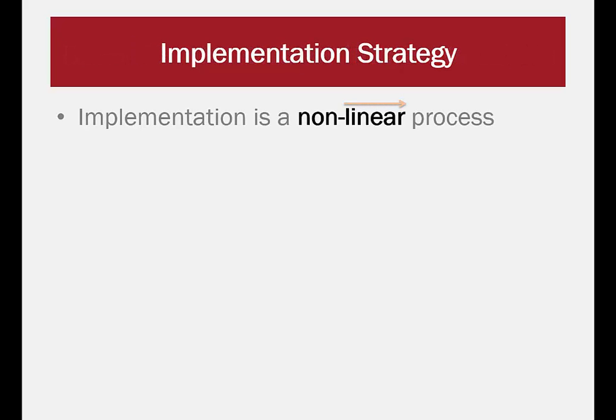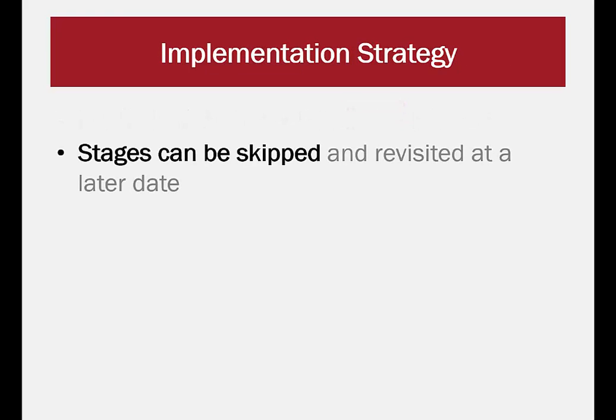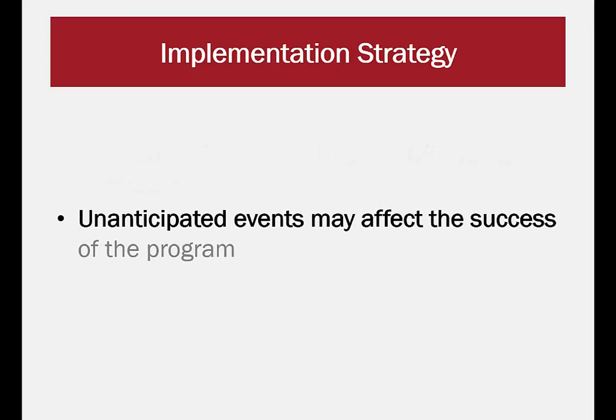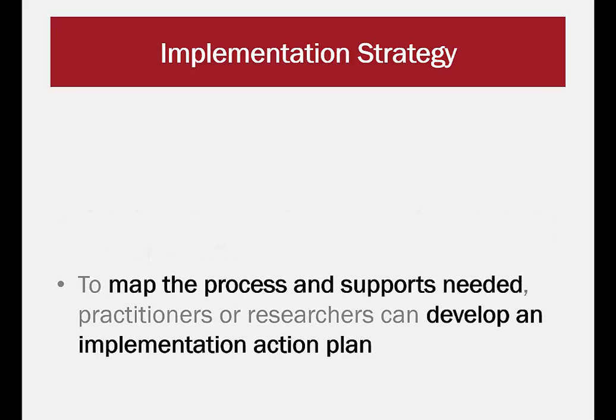Developing an implementation strategy is a non-linear process. Stages can be skipped and revisited at a later date. For example, a working group may be formed at the beginning and then updated with more knowledge users throughout the process. Unanticipated events may affect the success of the program. To map the process and supports needed, practitioners or researchers can develop an implementation action plan.